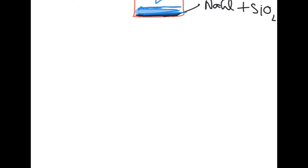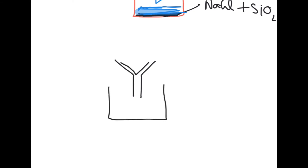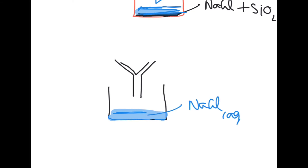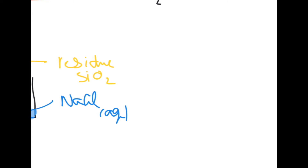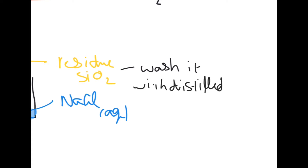We then pass the mixture through a funnel with a filter paper inside. Sodium chloride will pass through along with water and will be collected as filtrate in a beaker, while silicon dioxide will be collected as residue on top of the filter paper. We would then wash the residue with distilled water to remove any impurities and dry it in the folds of filter paper.